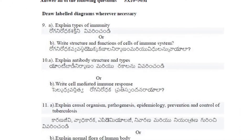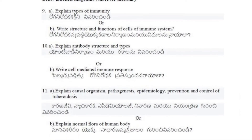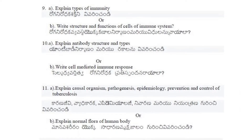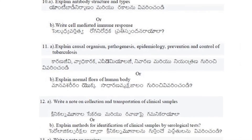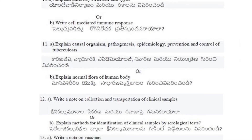Eleventh (a): Explain casual organisms, pathogenesis, epidemiology, prevention and control of tuberculosis. (Telugu: karana jivi, vyadhikaraka, epidemiology, nivarana maryu niyantrana guri nchhi vivari nchandi.) Eleventh (b): Explain normal flora of human body. (Telugu: Manava shariiram yoka sadharana vrukshajalam guri nchhi vivari nchandi.) Twelfth (a): Write a note on collection and transport of clinical samples. Twelfth (b): Explain methods for identification of clinical samples by serological test.